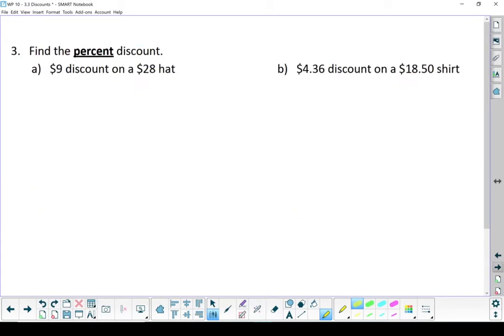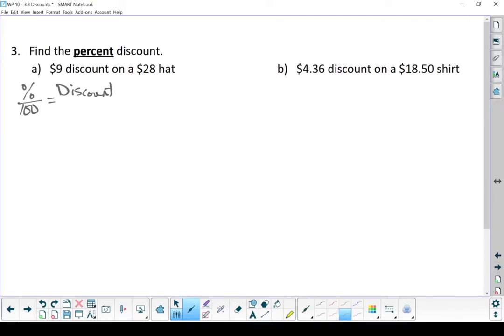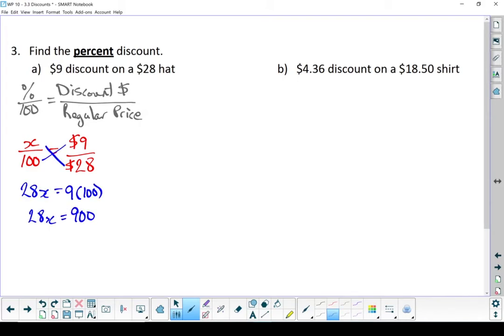The next question we're looking at: we know how many dollars we saved, we know the original price, but what we don't know is the percent. What is our percent of savings? As always, we'll put down our formula first. Let's put our numbers in. In this case, we don't know what the percent discount is. Let's put an X in there and cross-multiply.